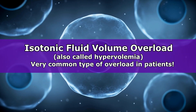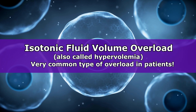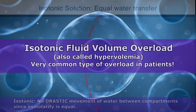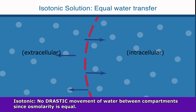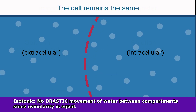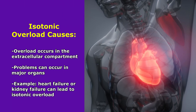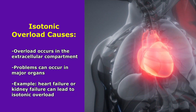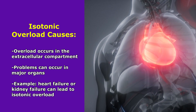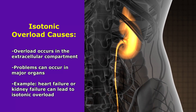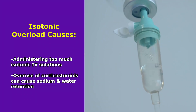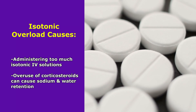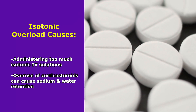Isotonic fluid volume overload, sometimes referred to as hypervolemia, is a very common type we see in patients. With this, there is no movement of water between compartments because osmolarity is equal — ISO means equal. However, we can have overload of the extracellular compartment due to problems with major organs like heart failure or kidney failure, excessive administration of isotonic IV solutions, or overuse of corticosteroids, which cause the body to retain sodium and water.